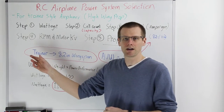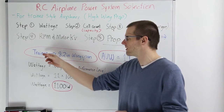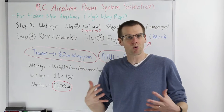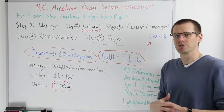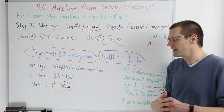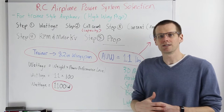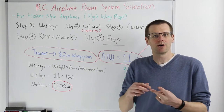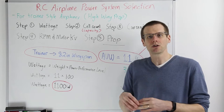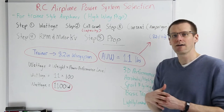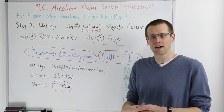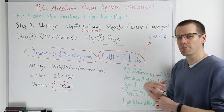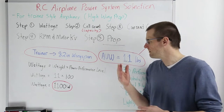We have to first define our airplane. We're going to follow a trainer-style, high-wing airplane with a wingspan of 82 inches and an all-up weight of 11 pounds. All-up weight means everything for that airplane is included. It's not an exact science — you may not know the exact weight since you don't know how heavy your motor, speed control, and battery pack are. You can collect a rough idea by guessing first, running through the process, then adding up your power system weight and re-evaluating if needed.